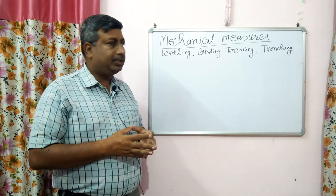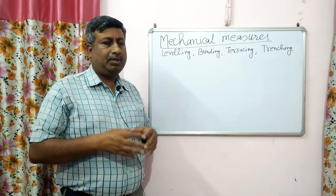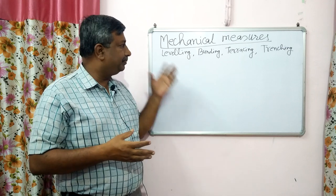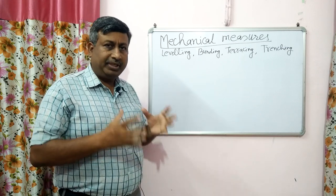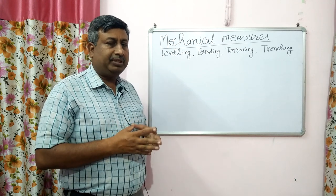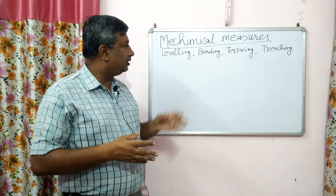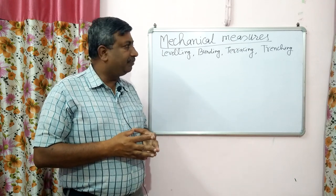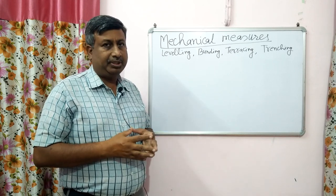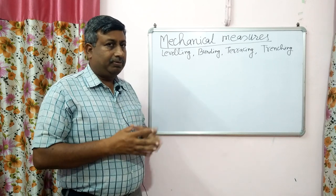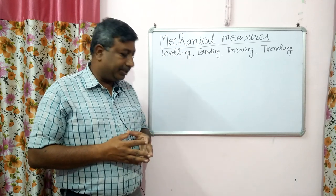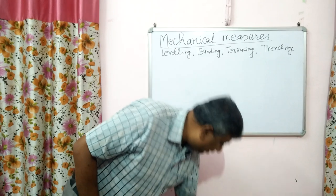These methods can be divided into different categories, but generally there are four major works under mechanical measures aimed to increase soil water storage: levelling of the field, bunding in the field, terrace formation, and trench formation. We will discuss these one by one.